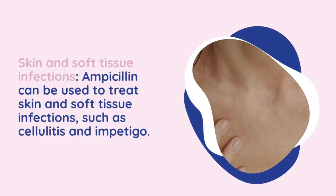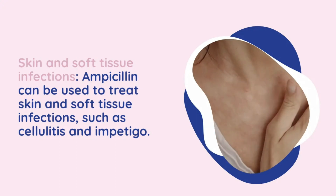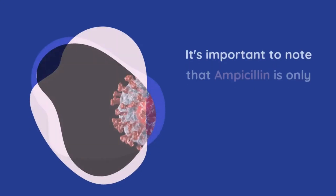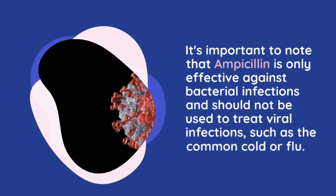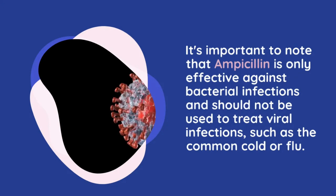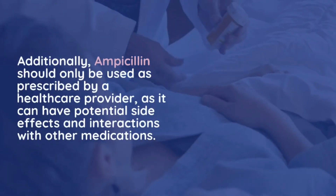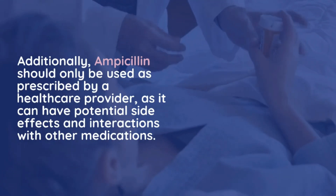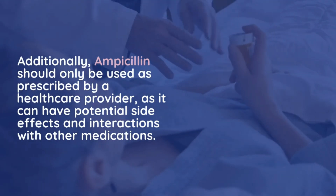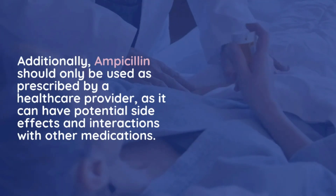Skin and soft tissue infections: ampicillin can be used to treat skin and soft tissue infections such as cellulitis and impetigo. It's important to note that ampicillin is only effective against bacterial infections and should not be used to treat viral infections such as the common cold or flu. Additionally, ampicillin should only be used as prescribed by a health care provider, as it can have potential side effects and interactions with other medications.